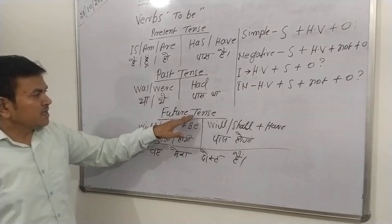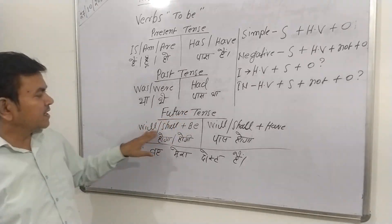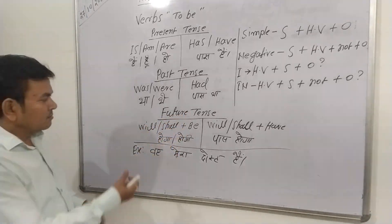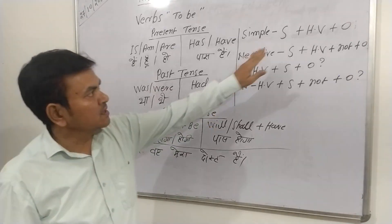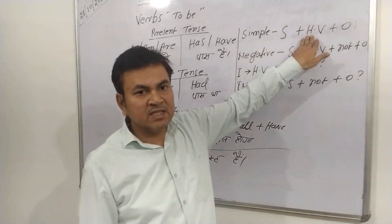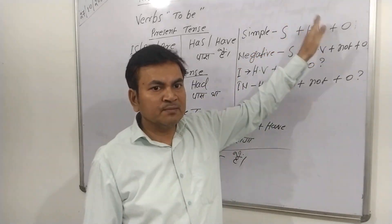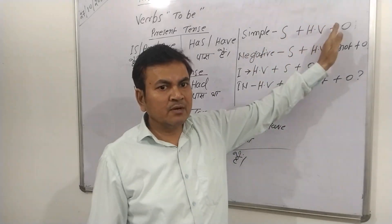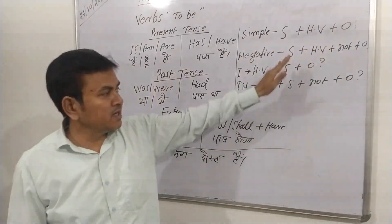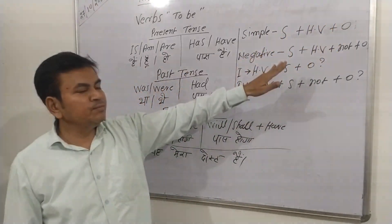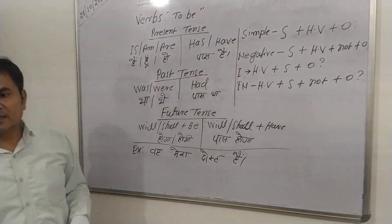Again, if you take the same sentence in future tense, then the sentences will become: 'he will be my friend' — here 'will' is the helping word plus 'be'; 'he will not be my friend'; 'will he be my friend?'; and 'will he not be my friend?'